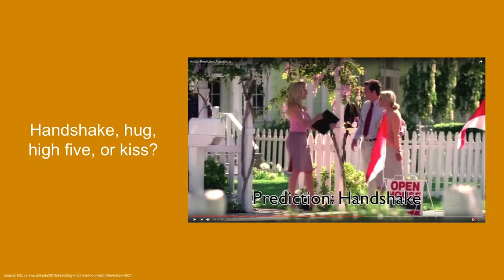MIT researchers had algorithms watch soap operas and sitcoms, with the job of predicting whether characters in a scene were going to handshake, hug, high-five, or kiss in the next few minutes. Imagine algorithms good at predicting human behavior — the commercial and intelligence applications are enormous, whether you're a government analyst or an e-commerce person optimizing user flow.